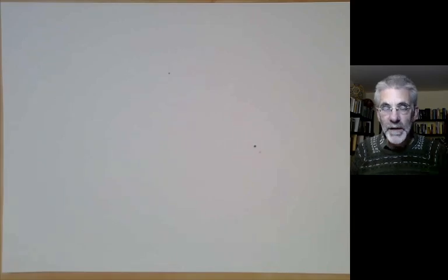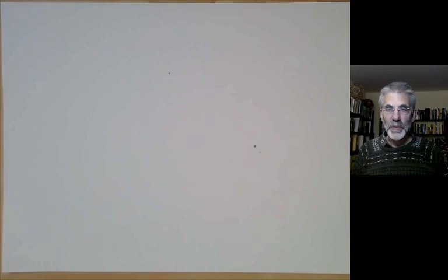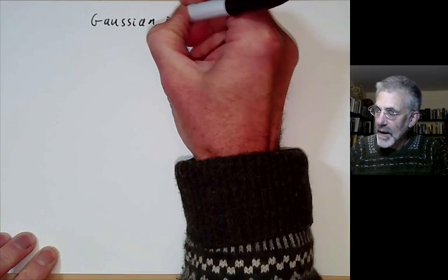This video is part of Berkeley Math 115, an introductory undergraduate course on number theory, and will be mostly about the Gaussian integers and their relation to binary quadratic forms.